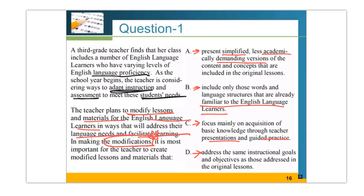Let's look at the answer for question one. We are given a scenario with a third grade teacher trying to adapt instruction to meet students of varying English levels. A is wrong because we cannot lower the academic level for students. B is also wrong because it creates content for what students already know — nothing new. C is wrong because 'basic knowledge' lowers academic expectation. D is correct because we should use the same instructional goals for all students — this represents equity.